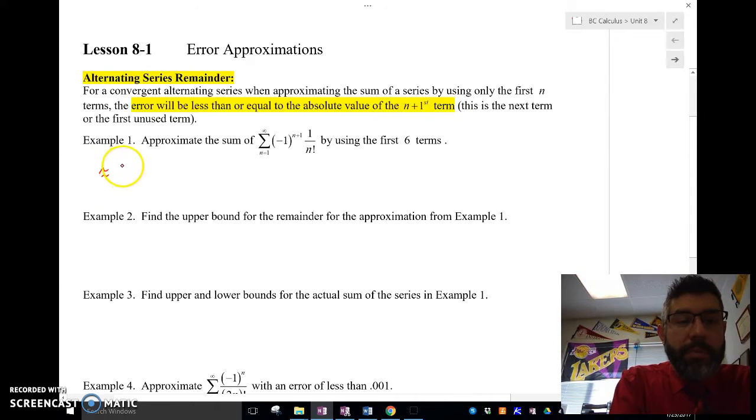So we're going to say that's approximately equal to 1 plus, we're going to plug in 2 in there, we're going to have negative 1 half, because it's 1 over 2 factorial, plus 1 over 3 factorial,